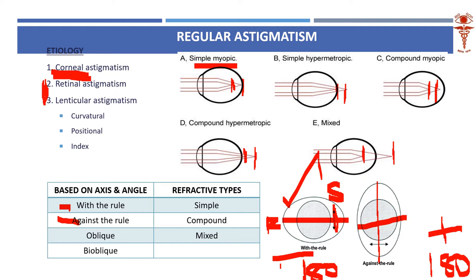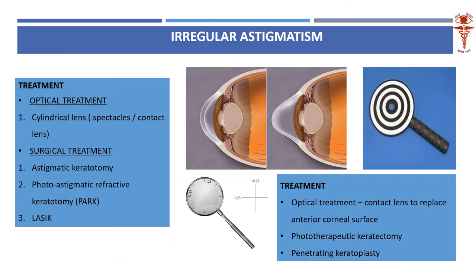Let us quickly check: compound myopic astigmatism — both images are in front of the retina. Compound hyperopic — both are behind the retina. Mixed — one in front, one behind. Simple myopic — one on the retina, one in front. Simple hyperopic — one on the retina, one behind. These are the various types of astigmatism.